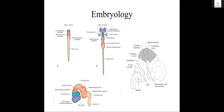The midbrain is the most rostral or most cranial part of the brainstem, since the brainstem is made of three parts. It originates from the primary brain vesicles — at about three to four weeks gestational age we have three primary brain vesicles: the prosencephalon, the mesencephalon, and the rhombencephalon. Throughout development, the mesencephalon stays the mesencephalon and gives rise to the midbrain.